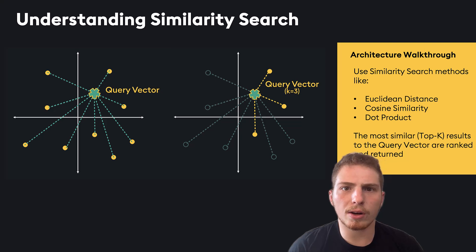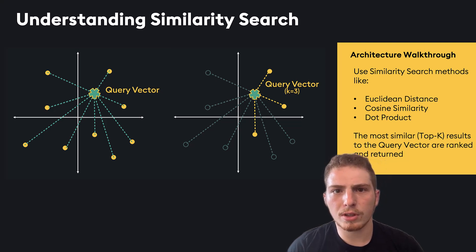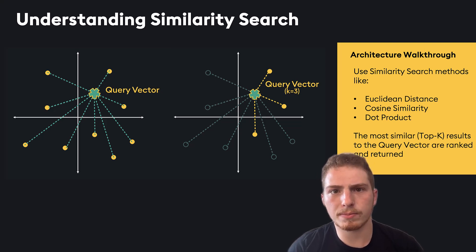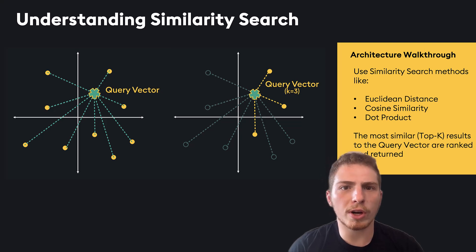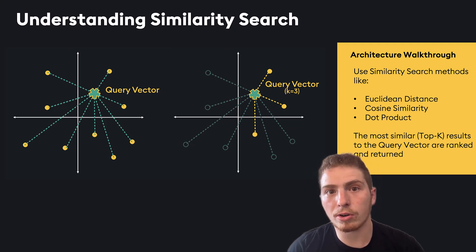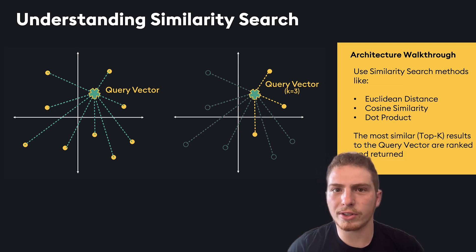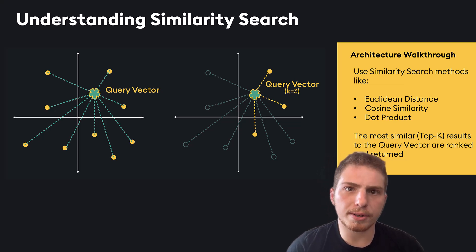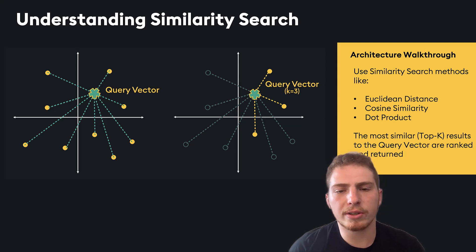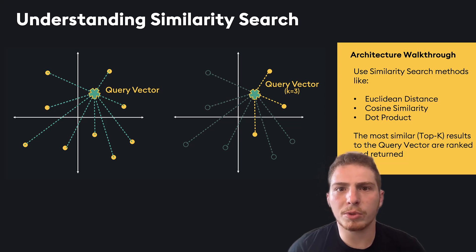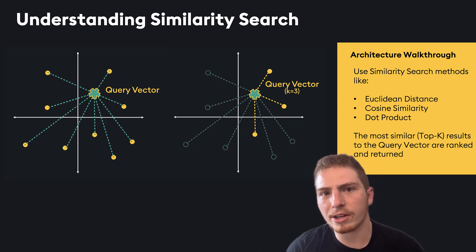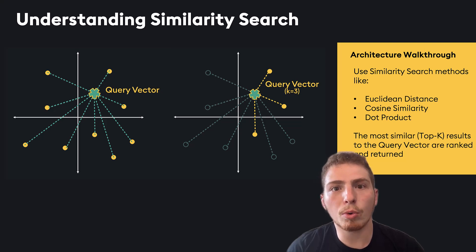For example, a user query is likely formatted differently than documents — it could be shorter or structured as a question while documents are longer. Cosine similarity will ignore some of these length features and still find documents relevant to the query. Dot product is the projection of one vector onto another; it's used in a wide variety of machine learning applications but is often less effective at higher dimensions, even more so than Euclidean distance.